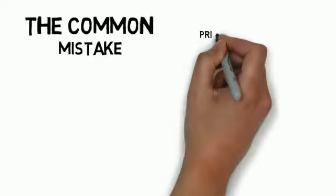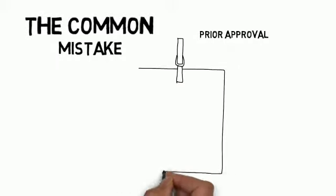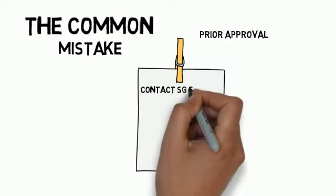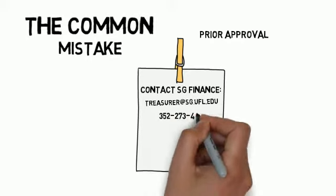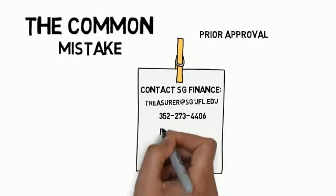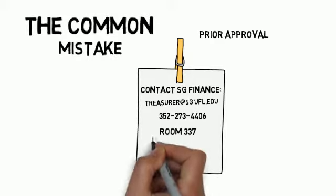The most common mistakes include organizations forgetting they need the prior approval of the student body treasurer. Any questions should be directed to the SG Finance treasurer at sg.ufl.edu, 352-273-4406, or in person in room 337 in the Reitz Union.